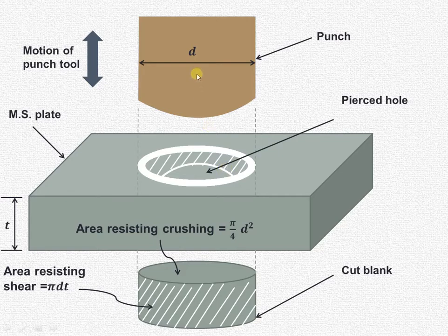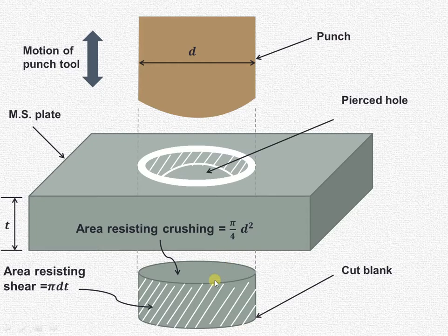When this particular punch tool moves in the downward direction, it touches the plate and there is a localized compression. This localized compression is known as crushing. The area resisting crushing or compression, as you can see, is equal to π/4 d². The difference between compression and crushing is that crushing is nothing but localized compression.